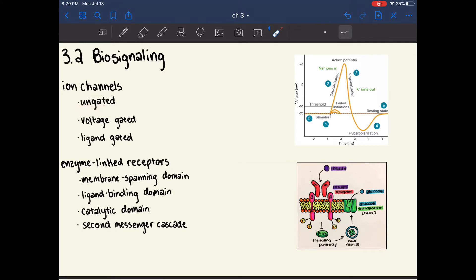Ungated ion channels are unregulated, which means that ions are allowed to flow through until an equilibrium is reached.